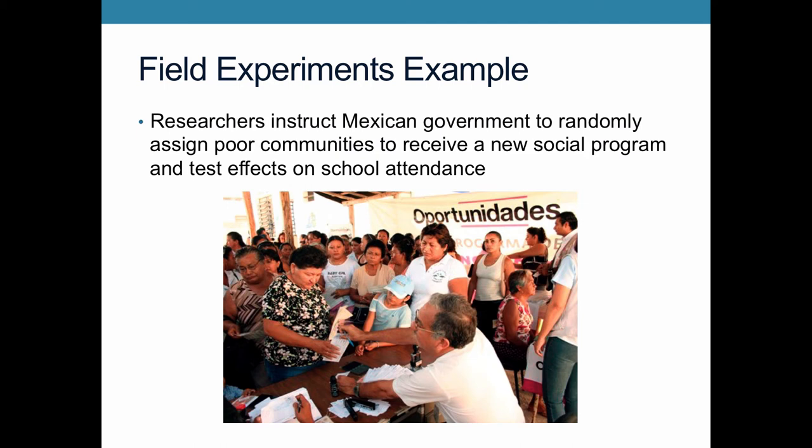The researchers wanted to see whether this program actually affected school attendance. They convinced the Mexican government to assign some communities to receive the program and other communities not to. The government was planning on rolling out the program throughout the country gradually, so they did some test communities first. Comparing over time, they saw that communities that had received Oportunidades did indeed have a larger degree of school attendance.